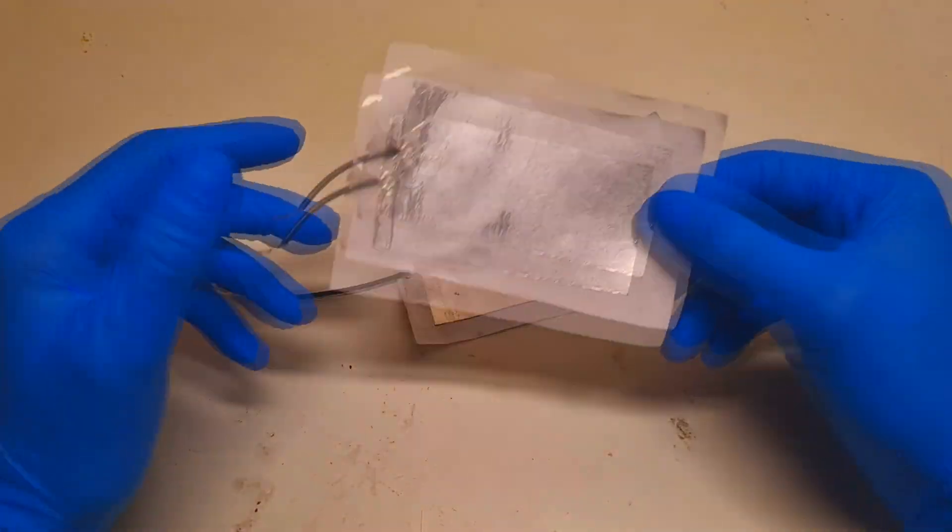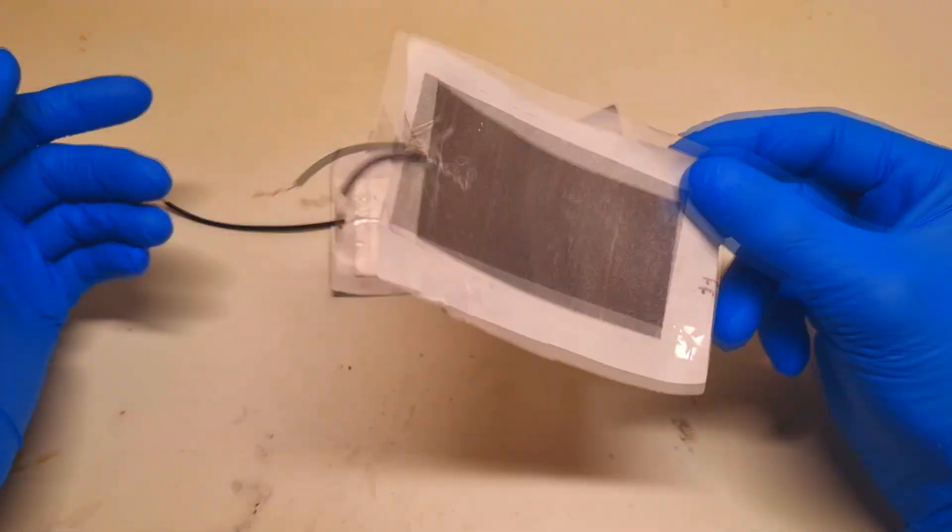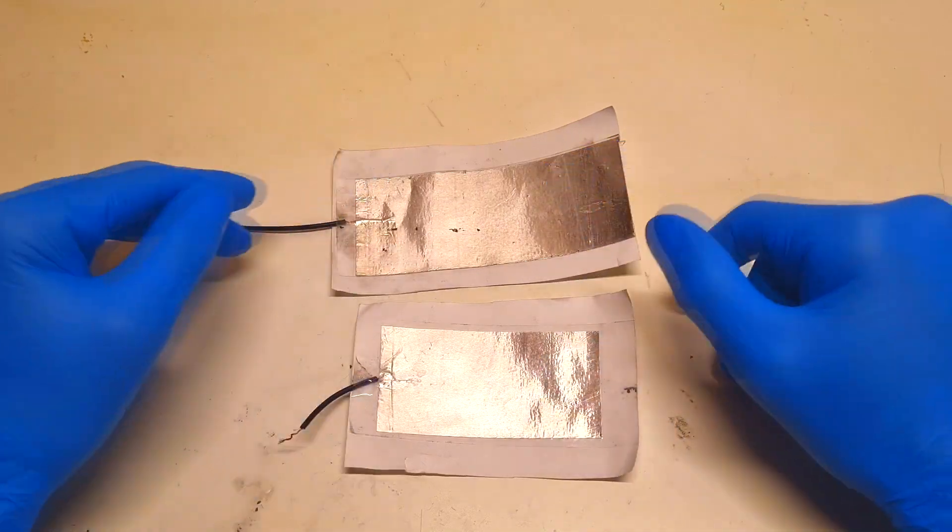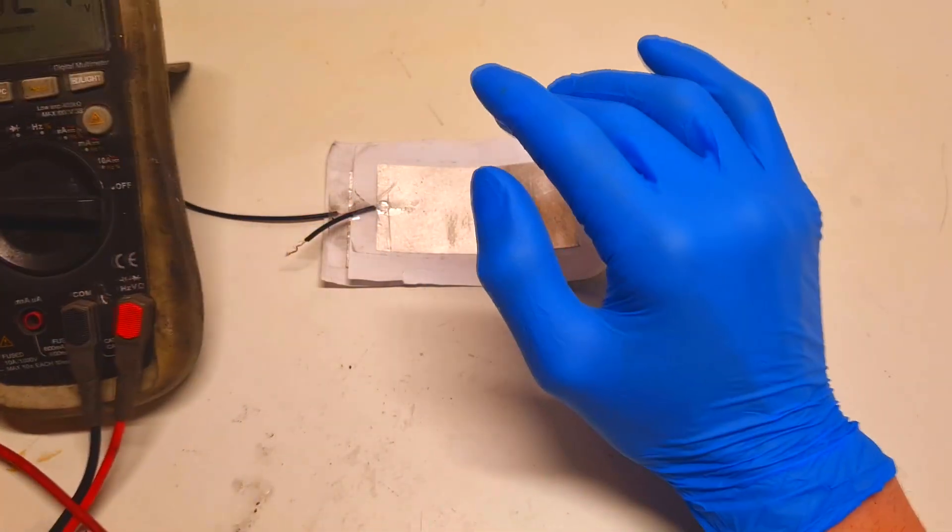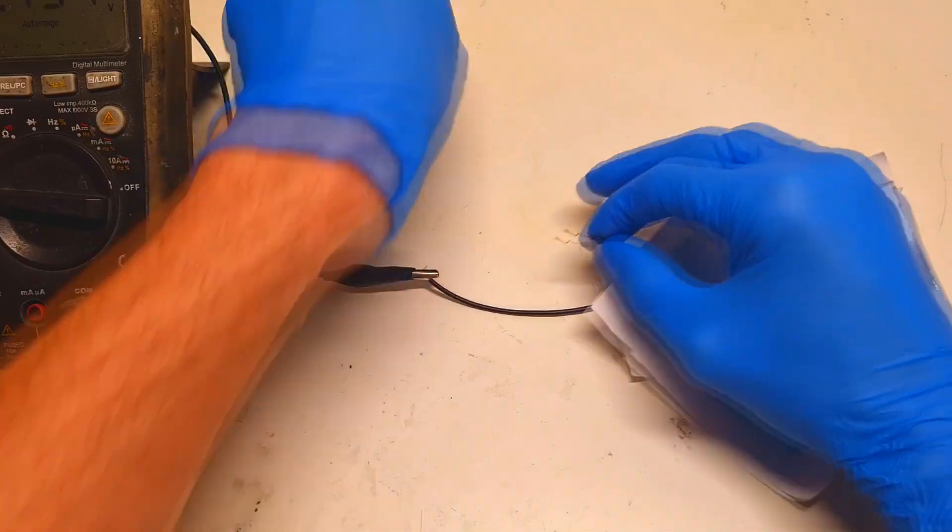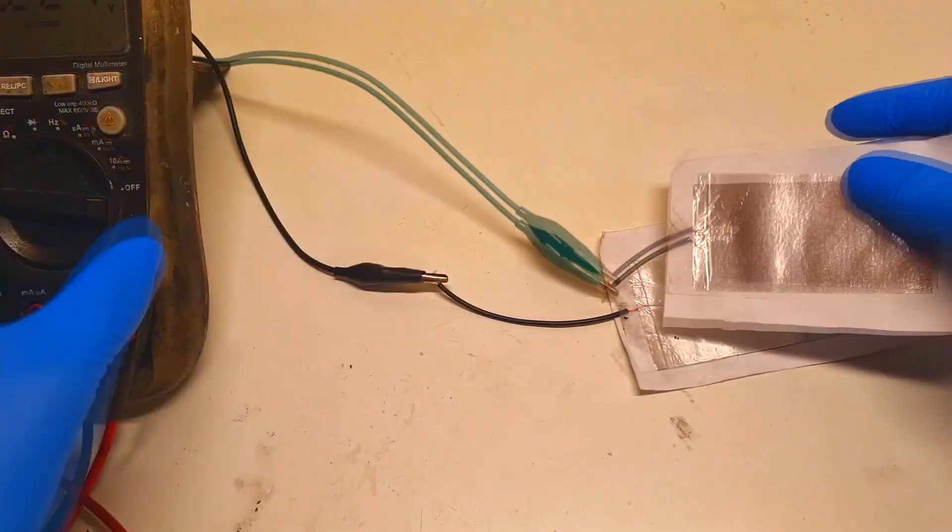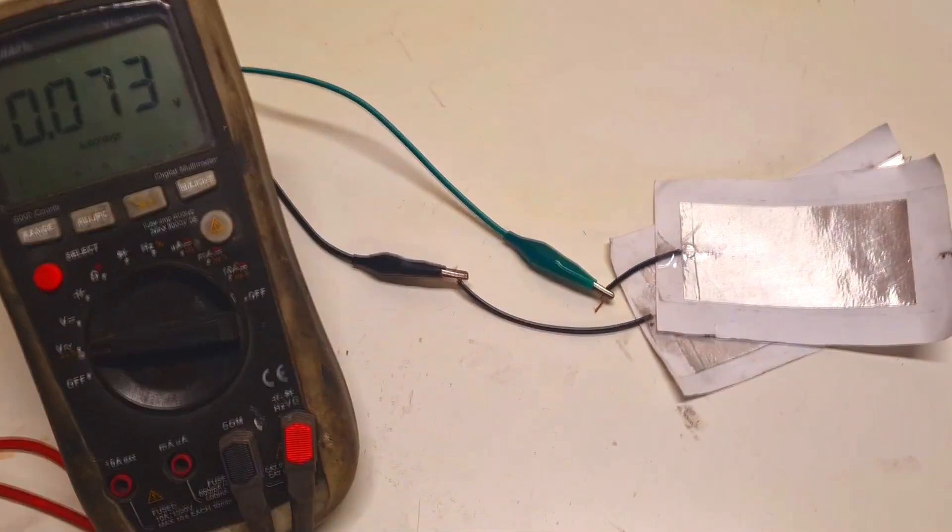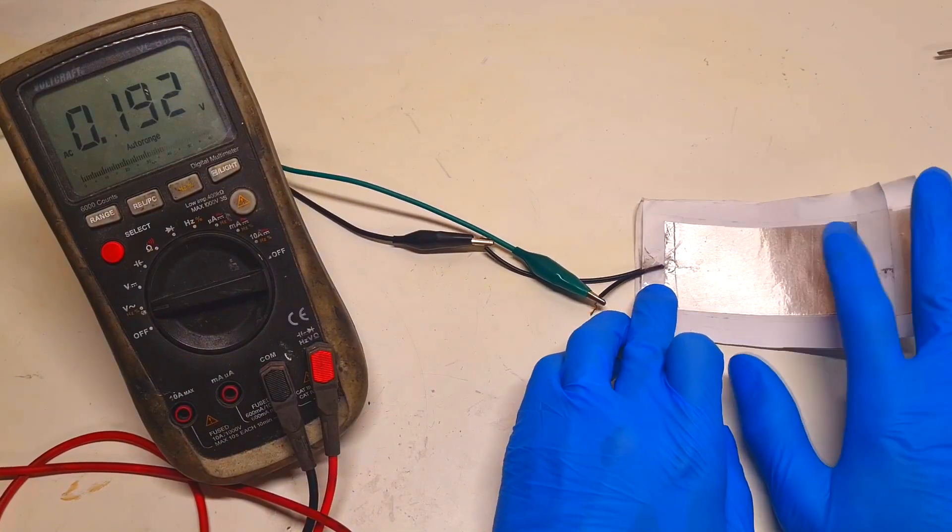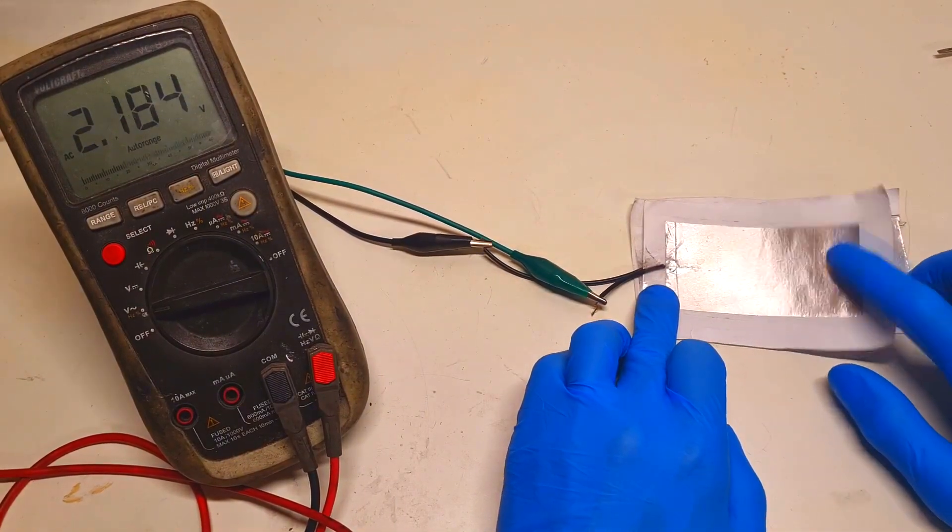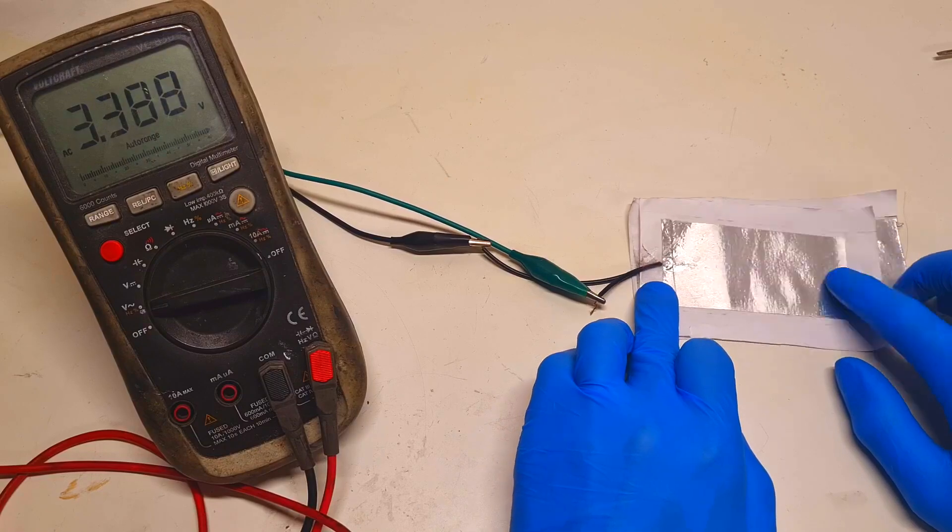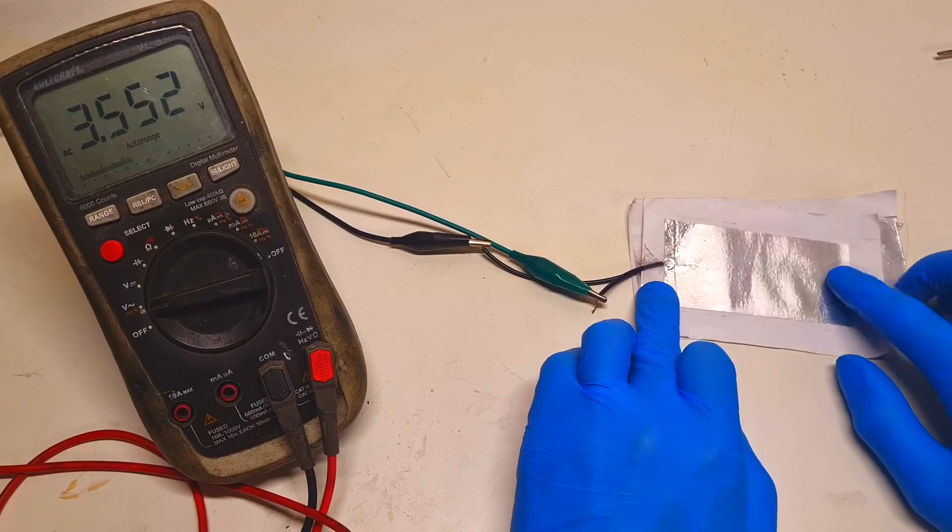For this triboelectric generator to work, I also need two electrodes. This triboelectric generator will harvest energy by tapping. Just for example, I will connect this to my multimeter. And you see with no problem I get the voltage of 3 to 4 volts.